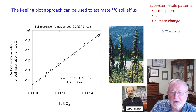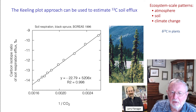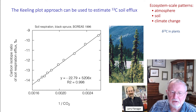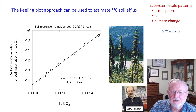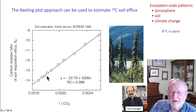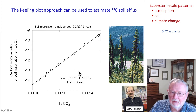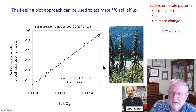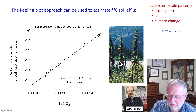Now we can begin to look at the fluxes coming out of the soil using the same Keeling plot approach — putting a chamber over the soil and measuring the change in CO2 concentration and the isotope ratio of that CO2. Larry Flanagan was among the first to show that the isotope ratio coming out of the soil, here -22.7 to -22.8, was a reflection of the material being decomposed in this black spruce forest in Canada.